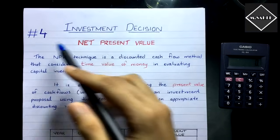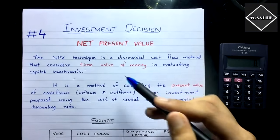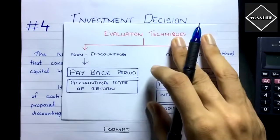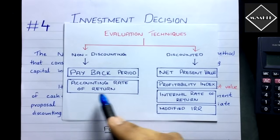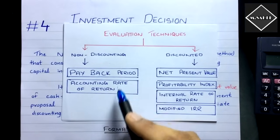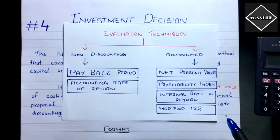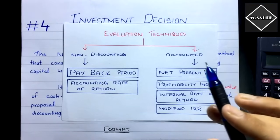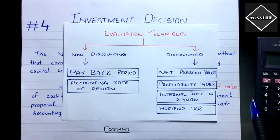Hi everyone, this is the fourth video of the investment decision chapter. In the previous three videos we have seen the concept of this chapter and solved problems on two techniques: the payback period and accounting rate of return. Those were non-discounting techniques. Now we are going to start the discounting techniques of capital budgeting.